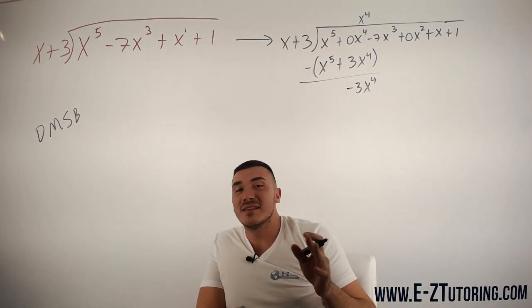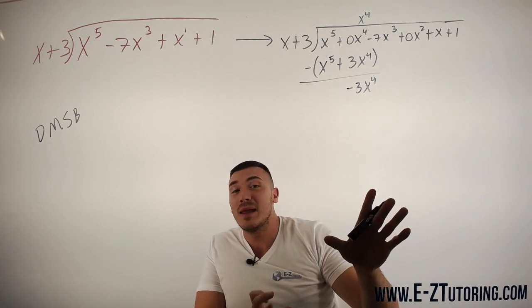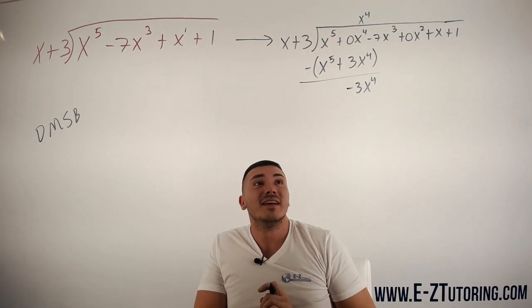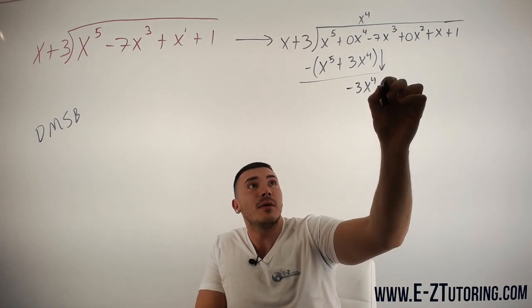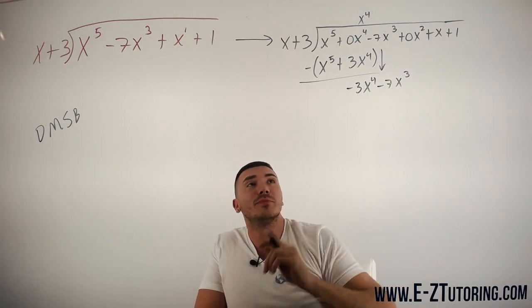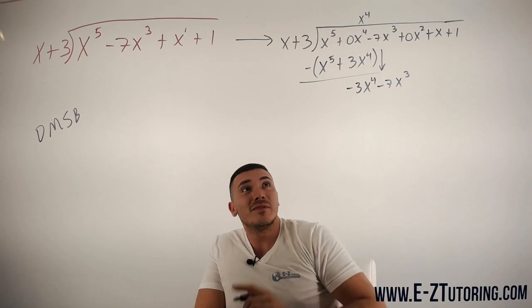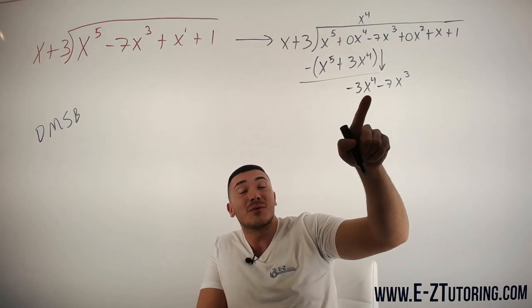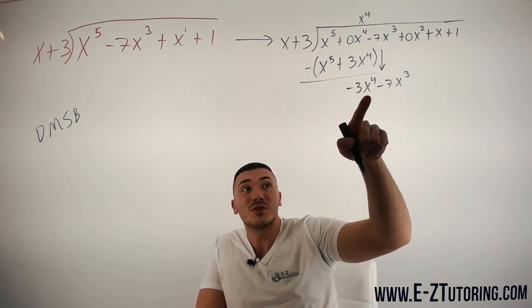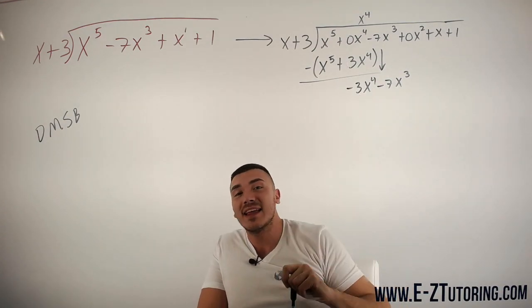I know I'm going fast. Like I said, I mainly wanted to focus on the 0x part in this question. Then we bring down minus 7x cubed. So even though we added that 0x to the fourth, you can see we're still getting x to the fourth terms, which is why it was so important to add that in there.